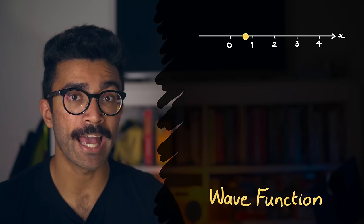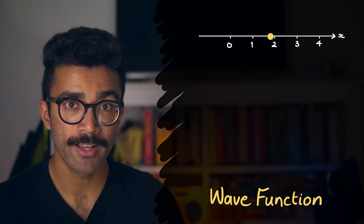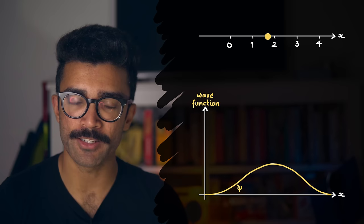A wave function is basically a mathematical function that contains all the information that we can know about our system. For example, if our system was just a single electron and its wave function looked something like this, then we could use this to tell us how likely we are to find the electron at different points or positions in space.